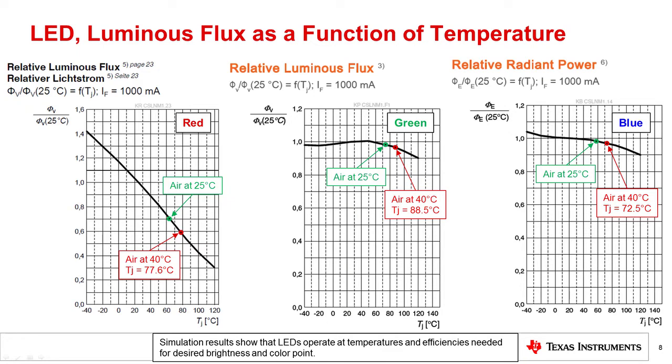LED luminous flux as a function of temperature is provided by LED manufacturers' data sheets. Although maximum junction temperatures allowed are 120 degrees Celsius for red LED and 150 degrees Celsius for green and blue LEDs, typically we do not want our junction temperatures to go that high. Note how efficiency of red LED drops with temperature. Running red LED close to the maximum allowed temperature would not only reduce the optical power, it would spoil the color point as well.